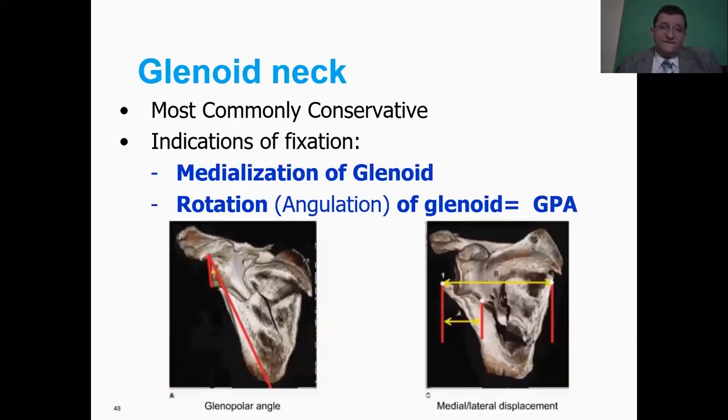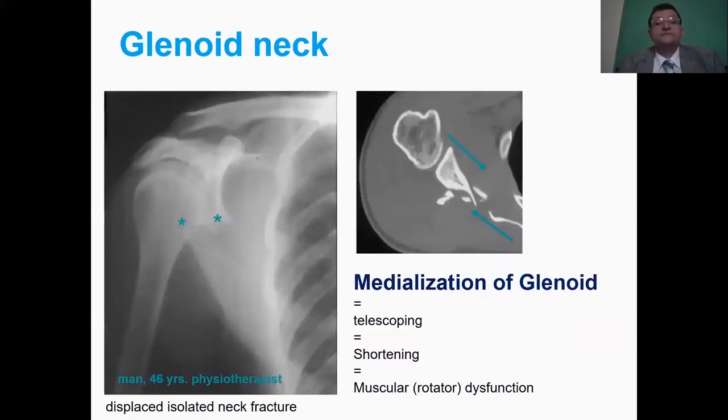While glenoid neck fractures are most commonly managed conservatively, unless there are medialization of the glenoid or rotation of the glenoid through the glenopolar angle. Medialization of the glenoid leads to scoping, shortening, and disruption and dysfunction of the rotator cuff.